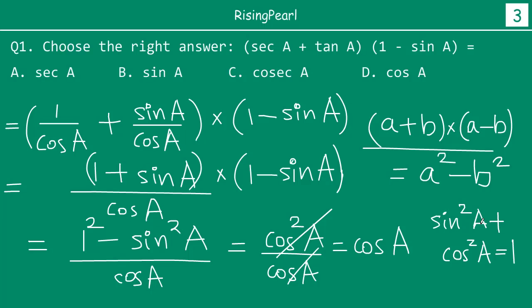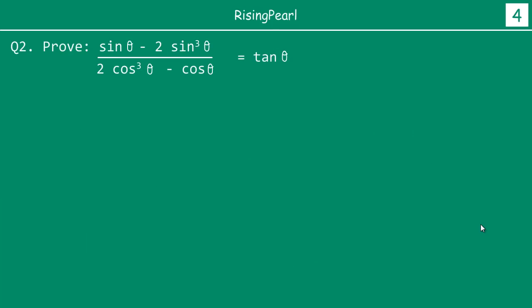So the answer is cos a, which is choice number d. That is our correct answer. Friends, this is one type of question you will get on questions involving trigonometric identities.